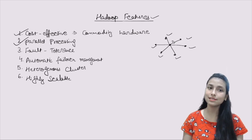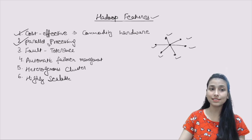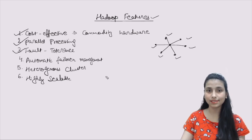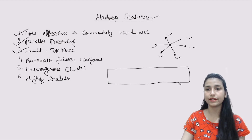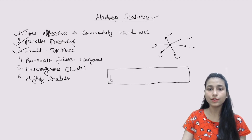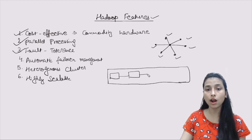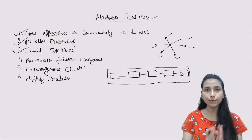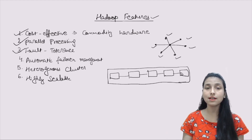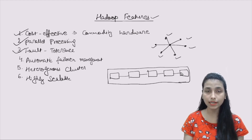Now let's discuss the third feature of Hadoop, which is called fault tolerance. This is very important to understand. Fault tolerance means: if there is any failover, how is Hadoop going to manage that? So let's understand this in detail.